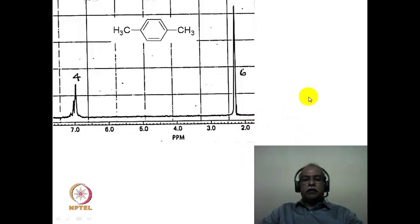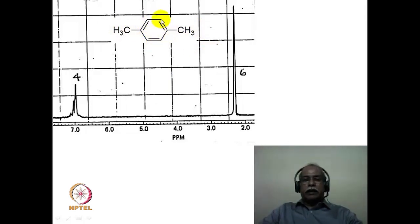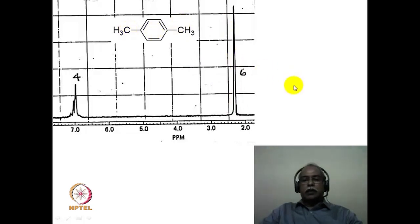This is a spectrum of para-xylene, which is highly symmetrical with vertical and horizontal planes of symmetry. The four aromatic hydrogens are chemically identical, appearing as a singlet of 4-hydrogen intensity. The two methyl groups are also chemically equivalent and give a single peak of 6-hydrogen intensity. It is a fairly simple spectrum to interpret.